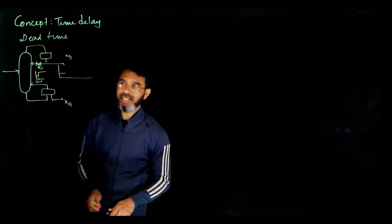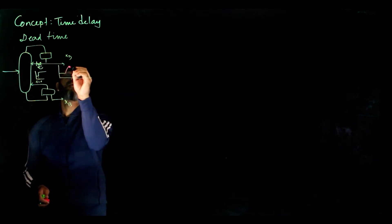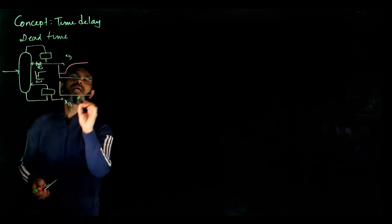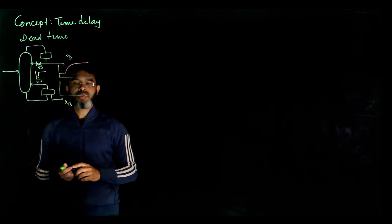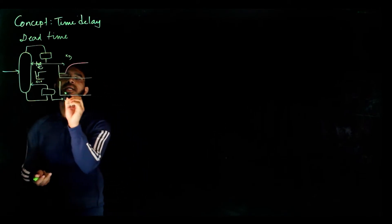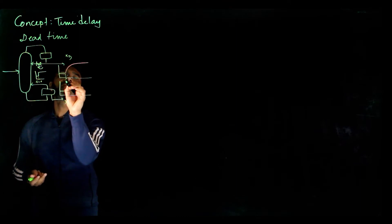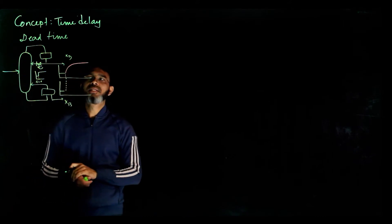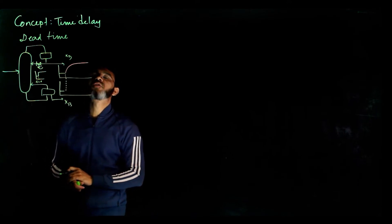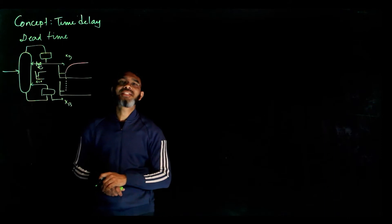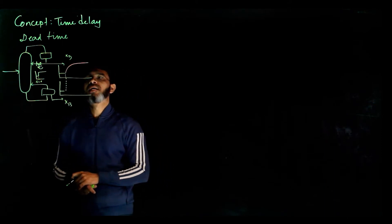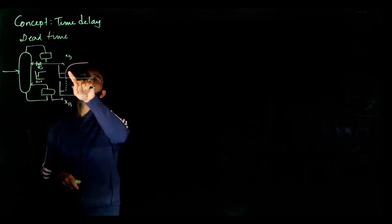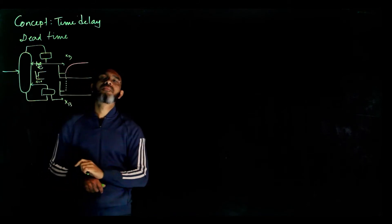Now what happens to xb? xb will also increase, but how does it increase and at what time? Initially xb is at some value. You can see that xd is directly coming from the top plate, but the reflux is also going down. So the effect of the reflux change on xd will be quicker than the effect on xb — meaning we're talking about when the change starts, not the rate of change.